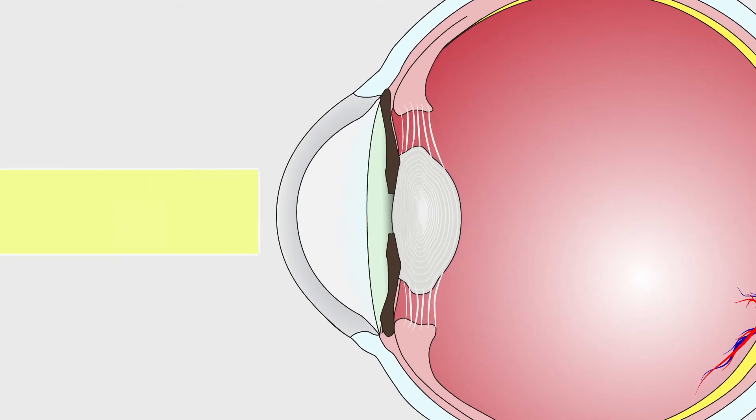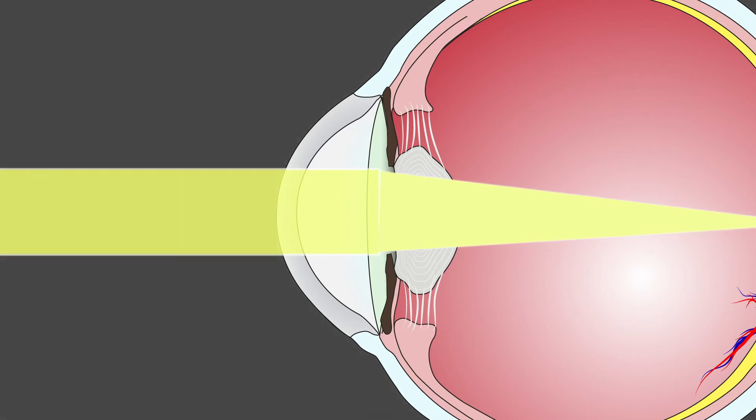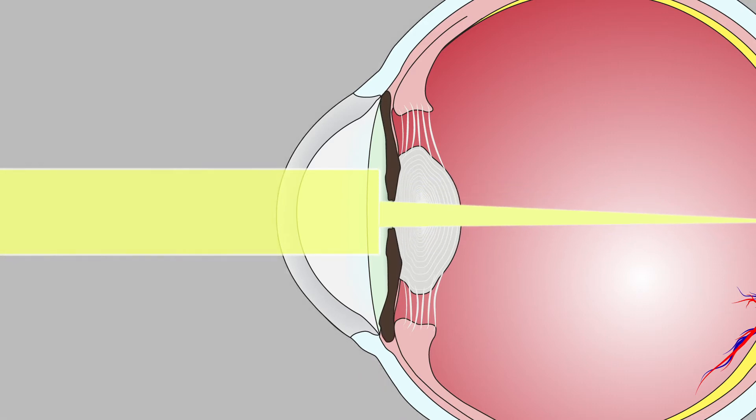The pupil adjusts its diameter depending on how bright the outside environment is. The pupil will dilate for darker environments, increasing its diameter, and will contract, reducing its diameter, for brighter environments.